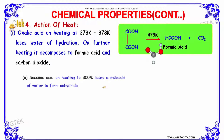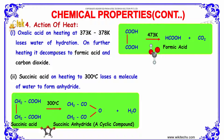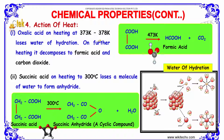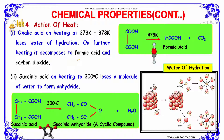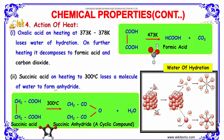On action of heat, oxalic acid on heating at 373–378 K loses water of hydration. On further heating it decomposes to formic acid and carbon dioxide. Succinic acid on heating at 300 degrees C loses a molecule of water to form the anhydride, and water is also formed as a byproduct.